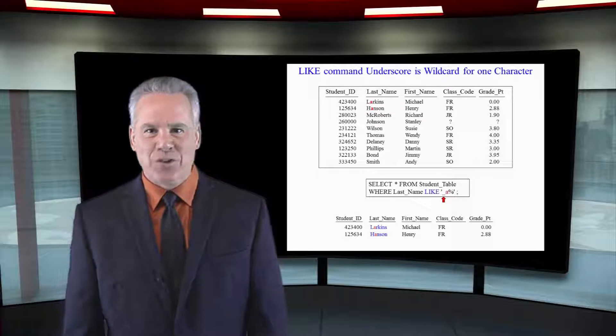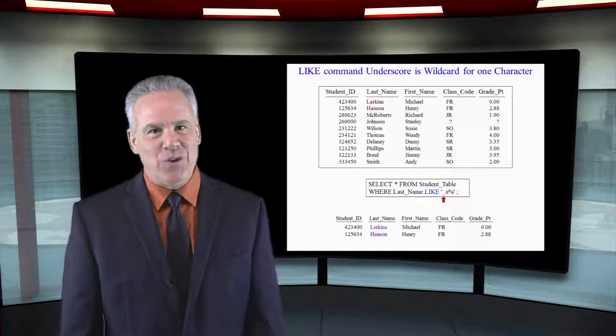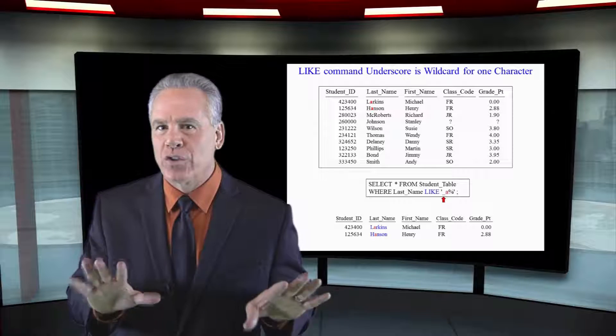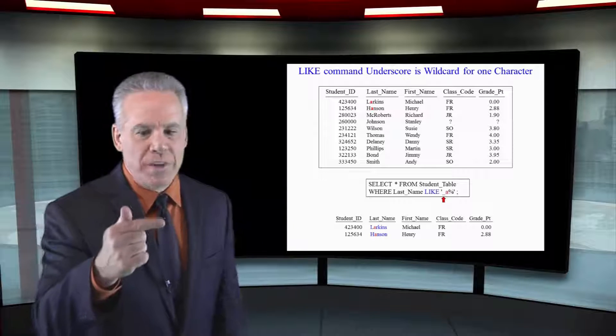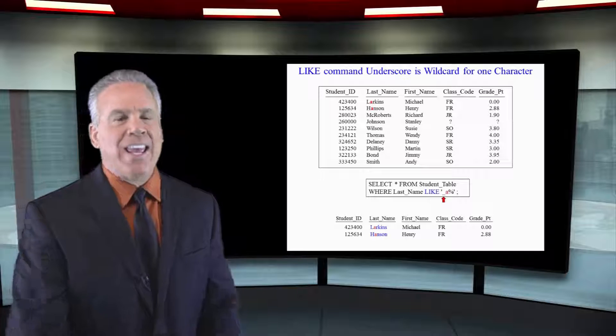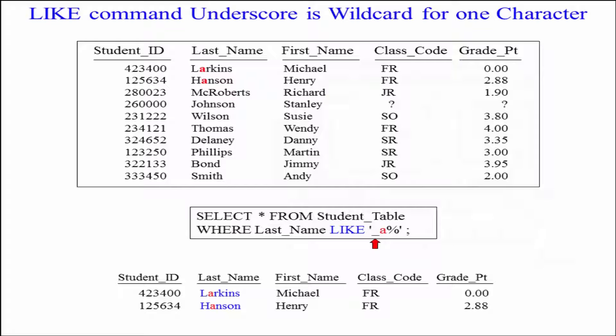Here we're going to see the UNDERSCORE and the PERCENTAGE used with the LIKE command. So you're going to get a real good understanding of this. You see here's the real scoop on it. An UNDERSCORE means a wild card for one character. A PERCENT, it's a wild card for any number of characters.